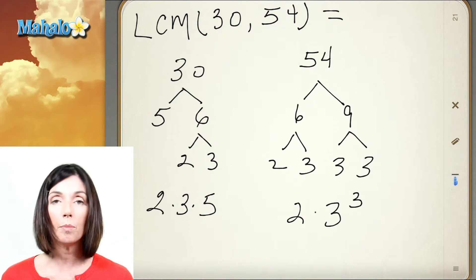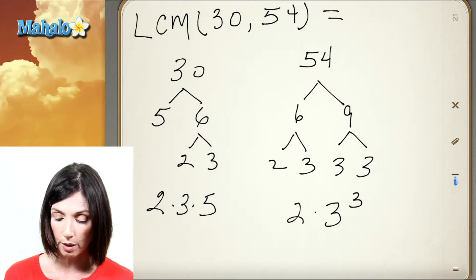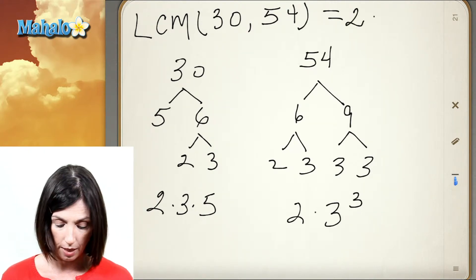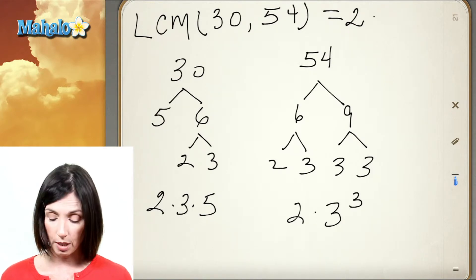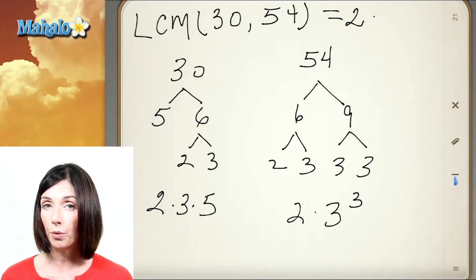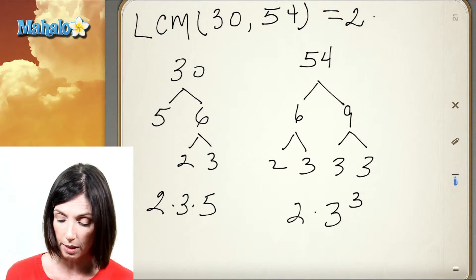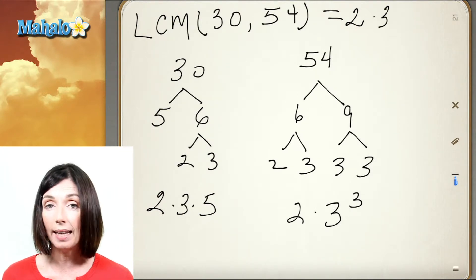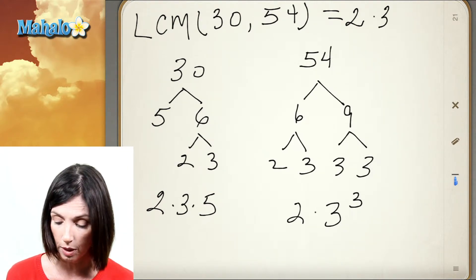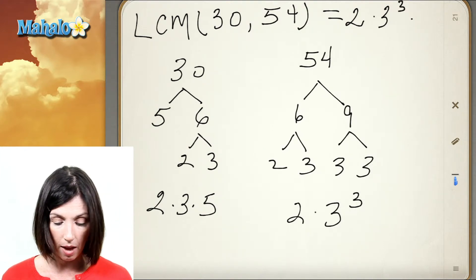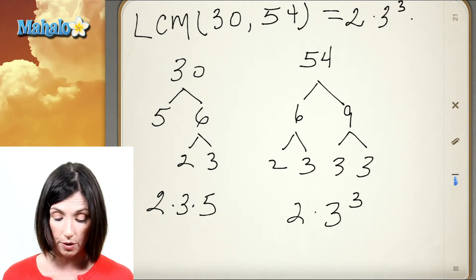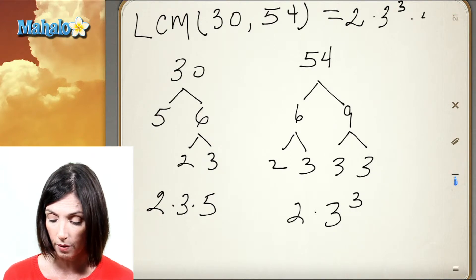They both have 2s in them and both the 2s are just to the power of 1. So I'm just going to get a 2 there. Now I've got a 3 in my prime factorization of 30, but a 3 to the power of 3 in my other one. So that's the one I'm going to take. I've got to take the highest power of anything that appears in either. So I'm going to get 3 to the power of 3. And then I have a 5 in my prime factorization of 30. So I'm going to take the 5 as well.